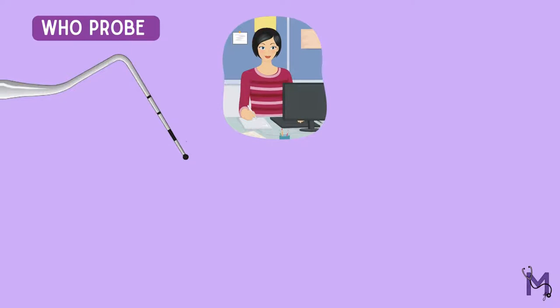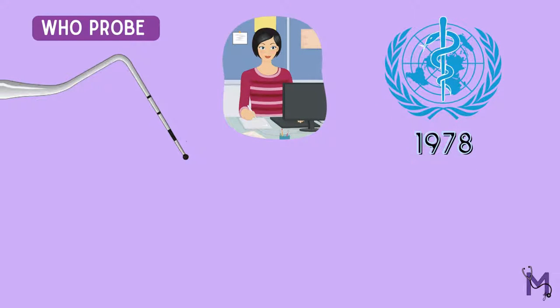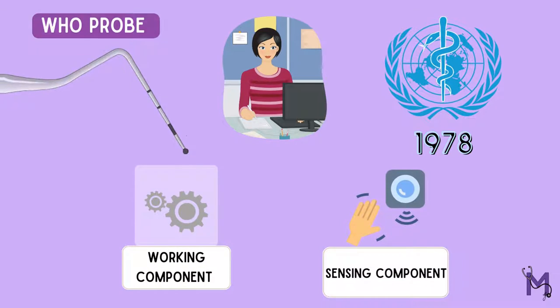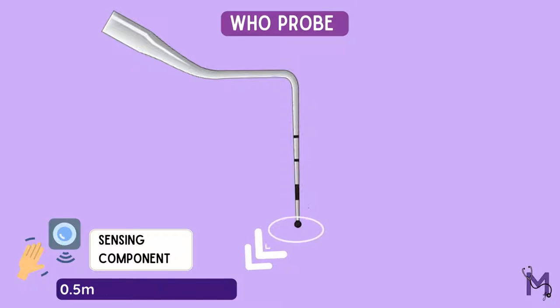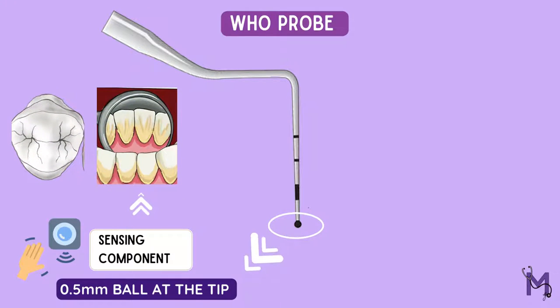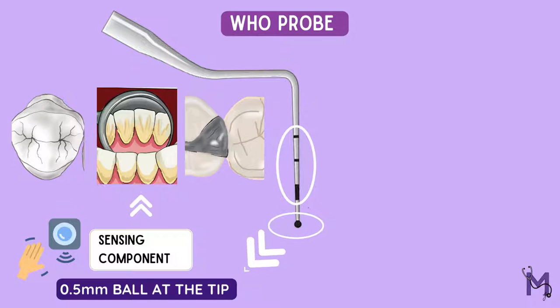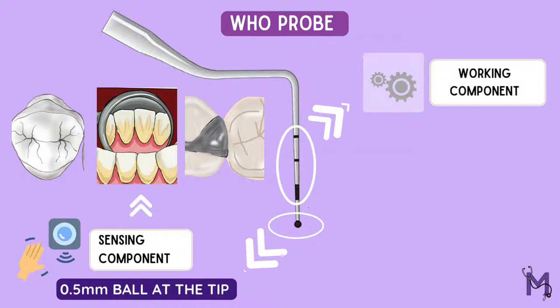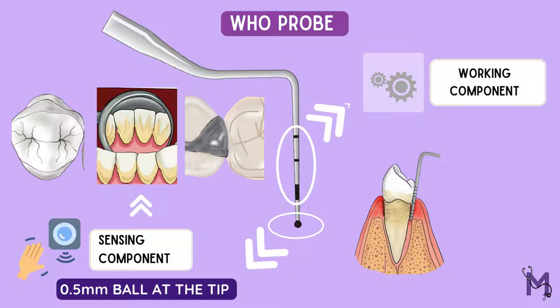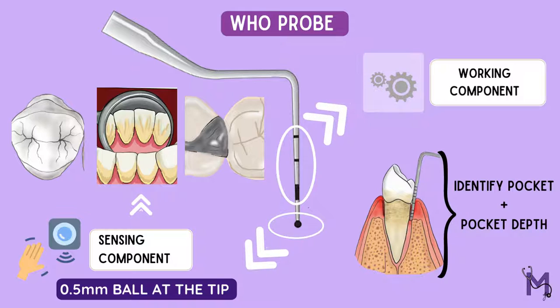The WHO probe is a specially designed probe developed by the WHO in the year 1978. It mainly has two components: the working and the sensing component. The sensing component of the probe is a 0.5 mm ball at the tip, and is called so because it helps in sensing a catch, presence of plaque and calculus, and presence of any defective margins. The markings on the probe, on the other hand, act as the working component, helping in the identification of the presence of a pocket and its extent.